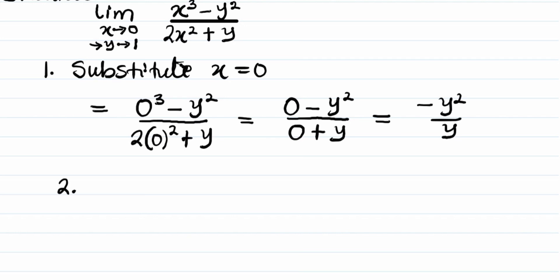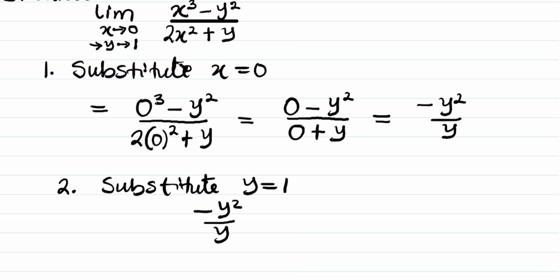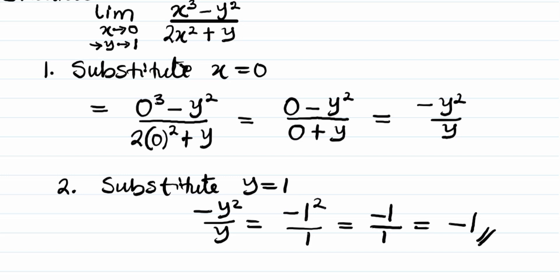Step 2 is to substitute y as being equal to 1. So minus y squared all over y becomes minus 1 squared all over 1. That's equal to minus 1 squared gives you 1, all over 1, and that's equal to minus 1.